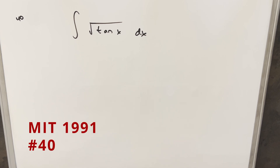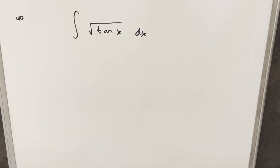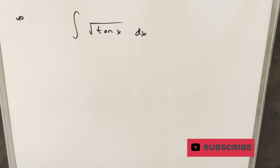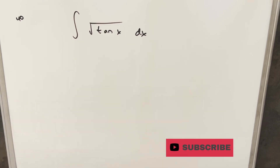We have here another interesting integral from the MIT integration bee. This one's all the way back in 1991, problem 40. We have the integral of the square root of tan x dx. I was going back in the history and I thought for sure I had done this integral before. I found I had done it as a definite integral, but that was actually a pretty different method. So I think this is the first time doing this.